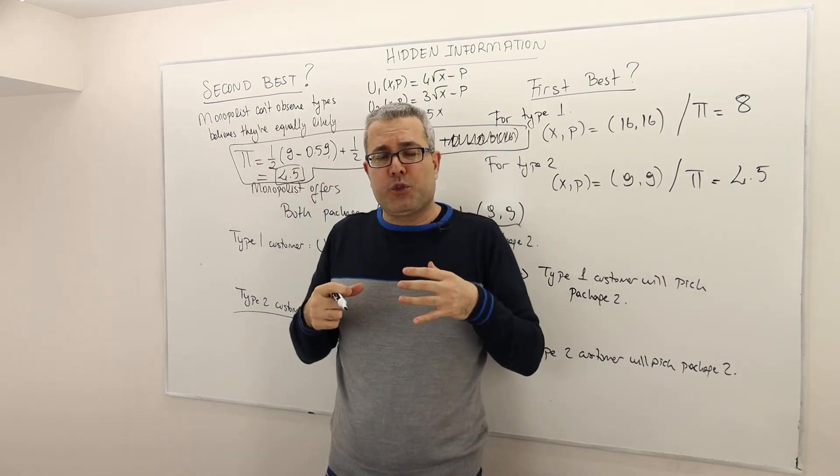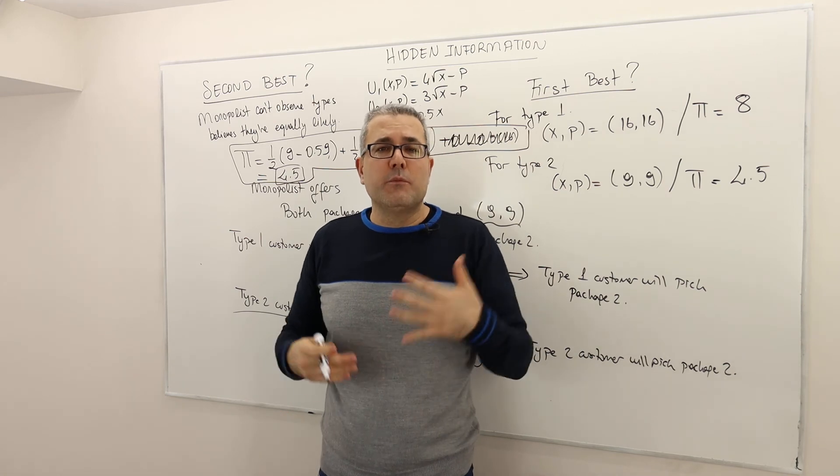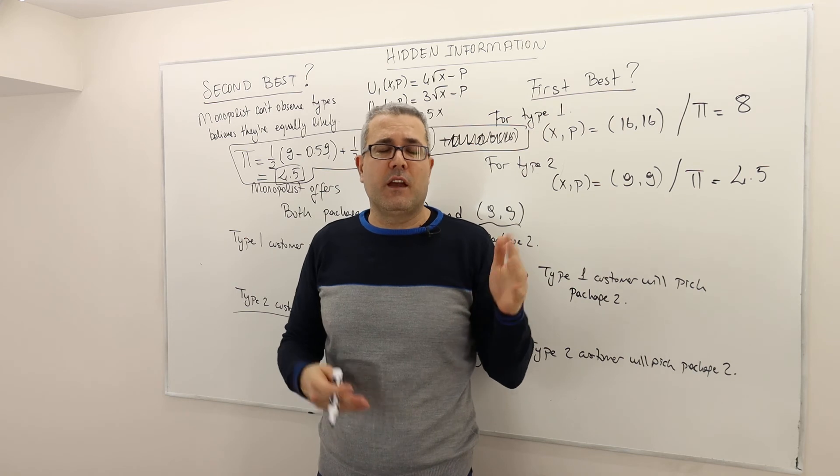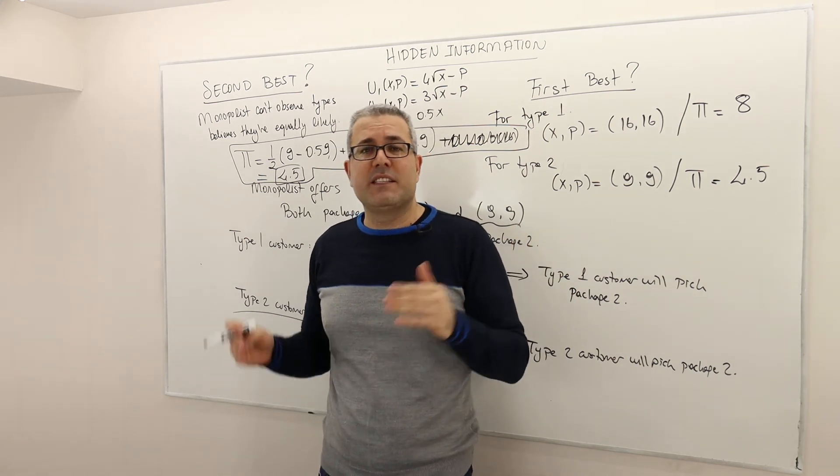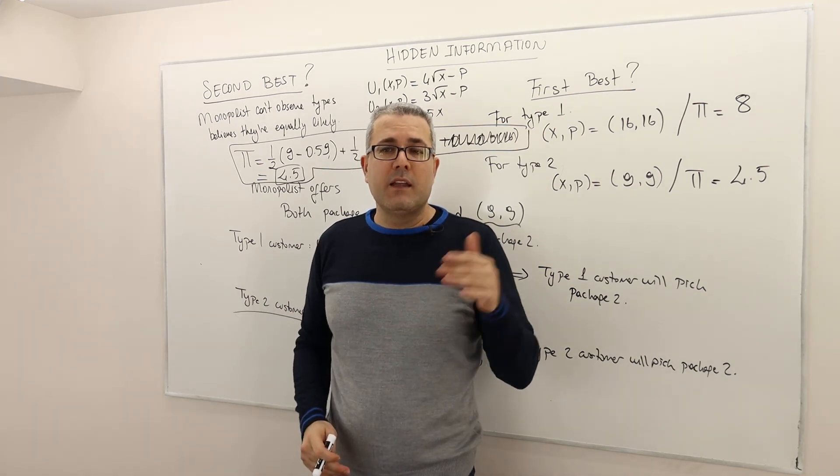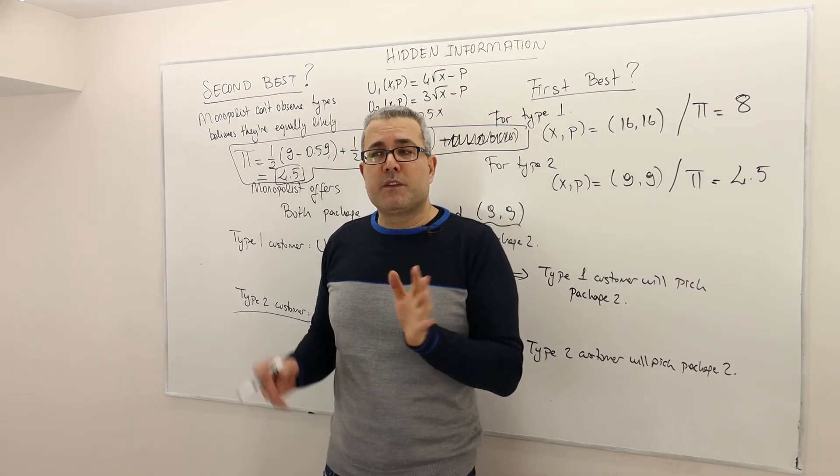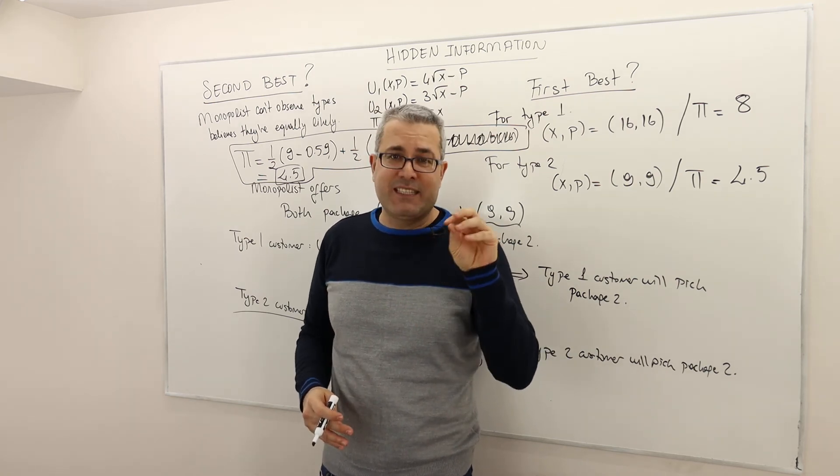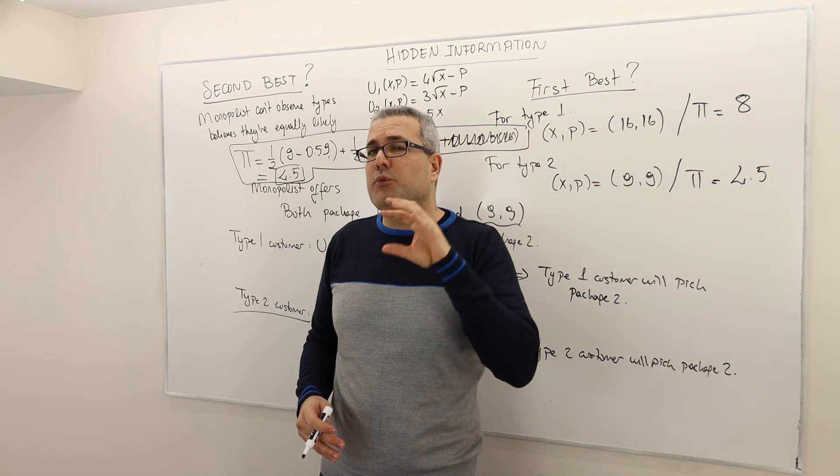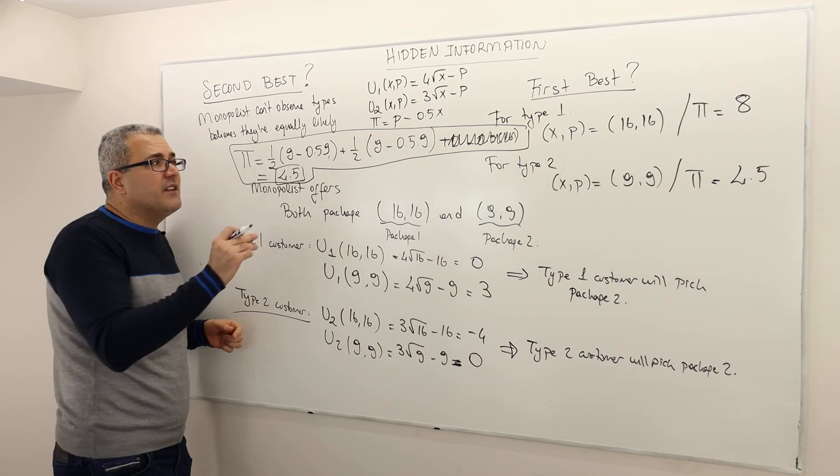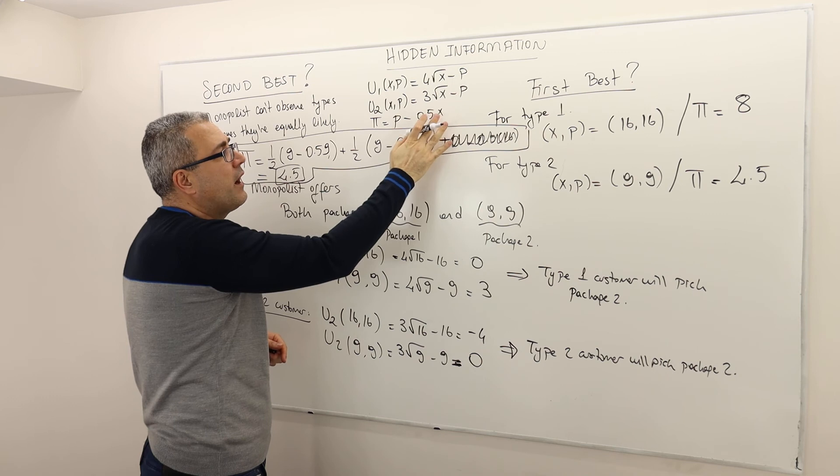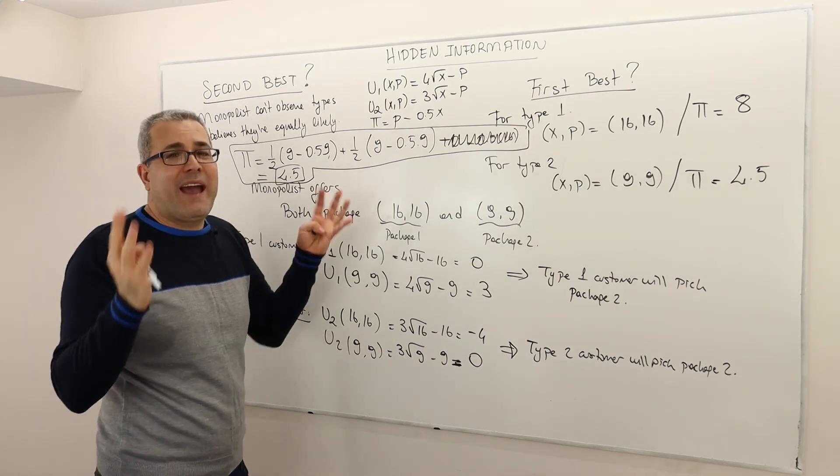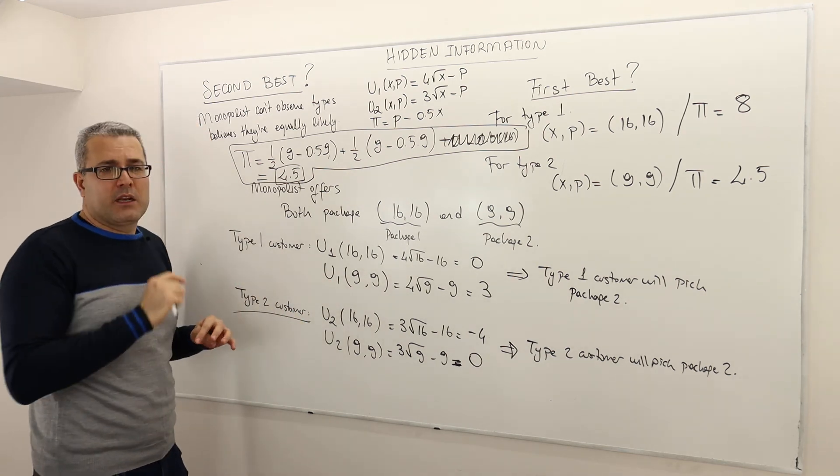This part is not a part of the profit function. Here's the reason we assume the following. The monopolist does not produce and then offer the packages. The monopolist first says to the customer, I can produce two packages. The one with nine packs, nine bottle water at a price nine and another 16 bottle water at a price 16, which one do you want to buy? Then the customer says, I'm going to buy nine. Well, then the monopolist goes back and prepares or produces the package and gives it to the customers. So if the customer doesn't pick the 16 package, well, then the monopolist doesn't produce it. So be careful about this.